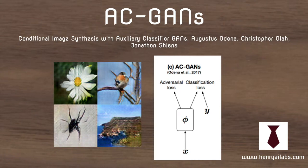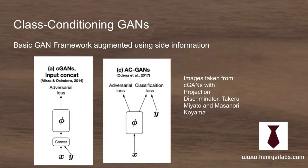This video will explain the ACGAN model. ACGANs build on the idea of class conditional GANs, which extend the original GAN framework by adding prior information in the form of a class label. If you have CIFAR-10 with 10 classes, this class label would be a one-hot vector with a one indicating the class, like a one in the cat index and zeros in all the other classes.